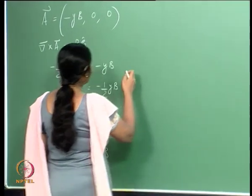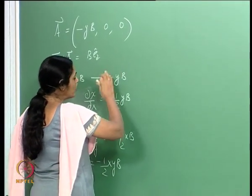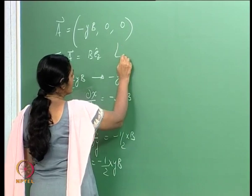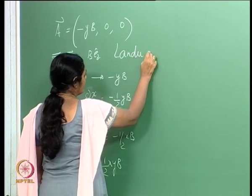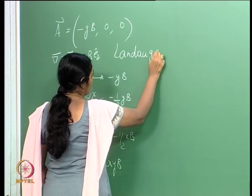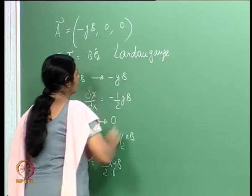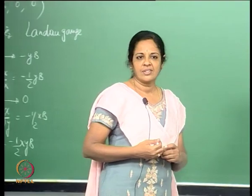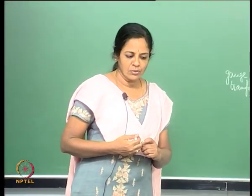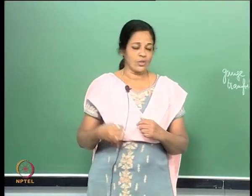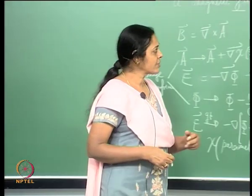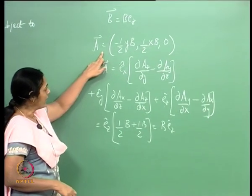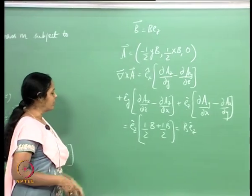It is also possible to choose A_x to be 0, A_y to be non-zero, and A_z to be 0. Any one of these is a possible choice of gauge. When I say I have chosen a gauge, it means I have already selected components A_x, A_y, A_z with which I am going to work. The freedom to choose any one of these infinite sets, each related to the other by a suitable gauge transformation, is called gauge freedom. A popular gauge is the Landau gauge, where two components are 0 and the third component is non-zero.